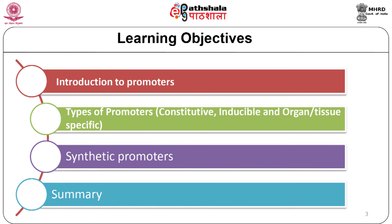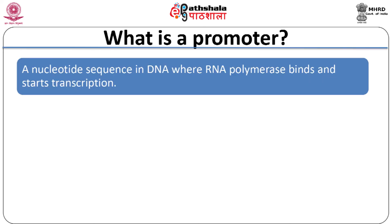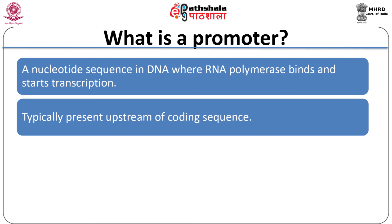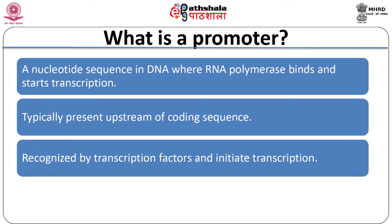We will discuss about promoters and their types and lastly, I will introduce you to synthetic promoters. In an organism, gene expression is regulated at various stages like transcription, translation, and post-translation. Transcription is an important step since it initiates gene expression. A promoter is a specific nucleotide sequence in DNA where RNA polymerase binds and starts transcription. Promoters are typically present upstream of the coding sequence. Promoter sequences are recognized by specific transcription factors which help in recruitment of RNA polymerases, thus initiating transcription.